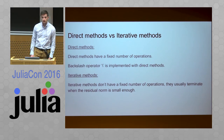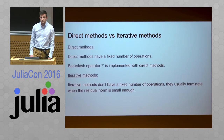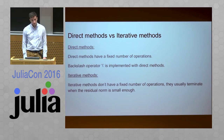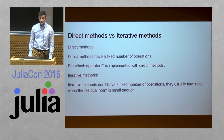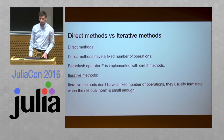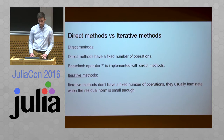What is the difference? Direct methods have a fixed number of operations — when you call it, you have the result, and that's it. The backslash operator is implemented with these methods. Iterative methods, in contrast to direct methods, don't have a fixed number of operations. They terminate under a certain criteria, which is usually when the residual norm is under a certain threshold.